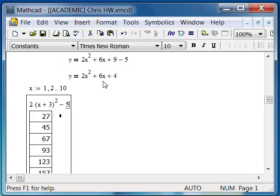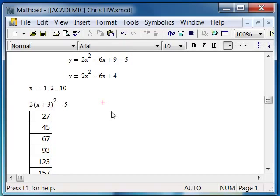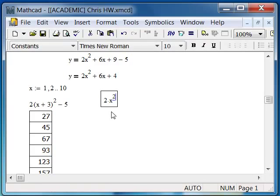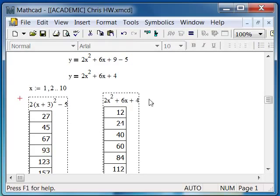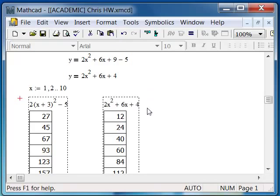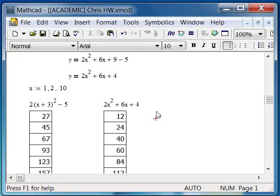Now, I'll take this expression, which I could copy, but I will type it, 2x squared, I'm hitting the space bar to go down there, plus 6x plus 4 equals. And now I have these two, which I want to align, and I can see that I've got a problem.